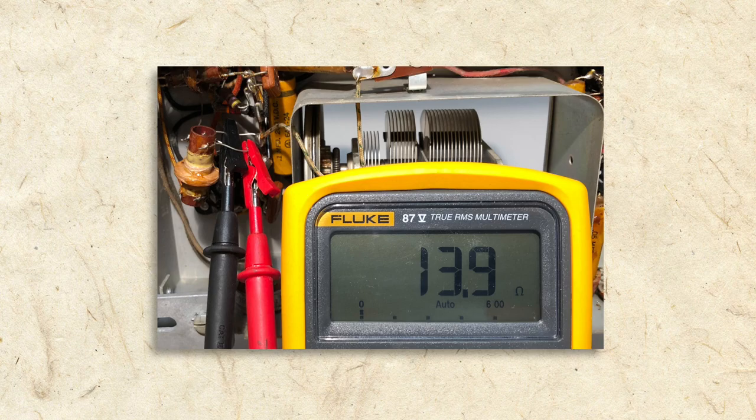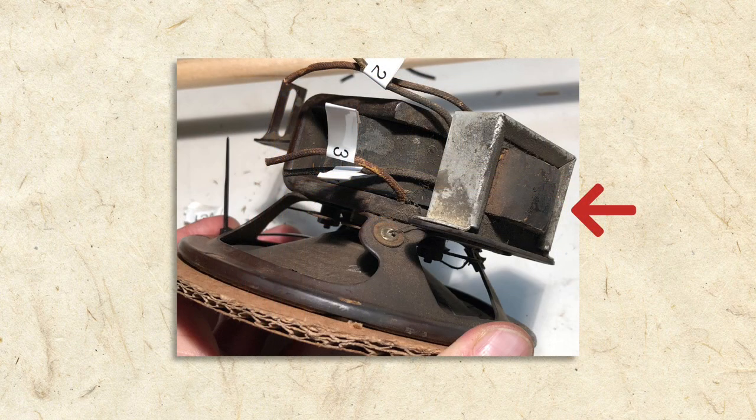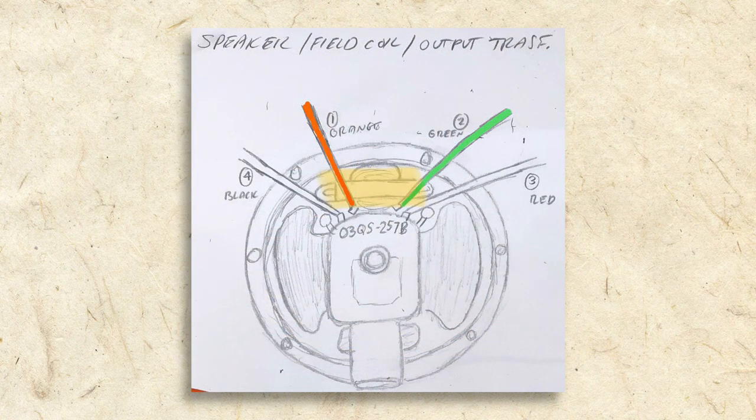As we've learned, transformer coils can be checked with an ohmmeter, and the output transformer in our radio tested fine. No repairs were required other than a little rewiring, which I'll show you later.